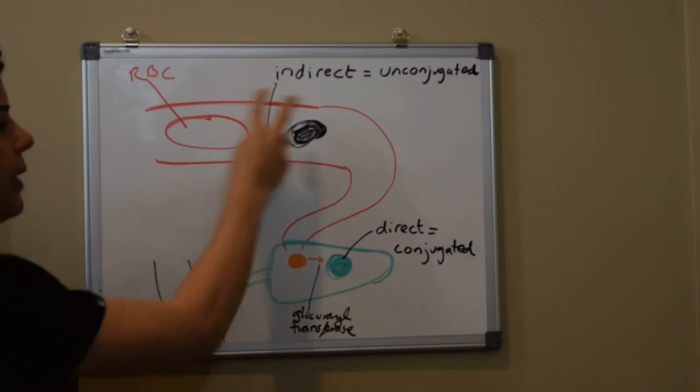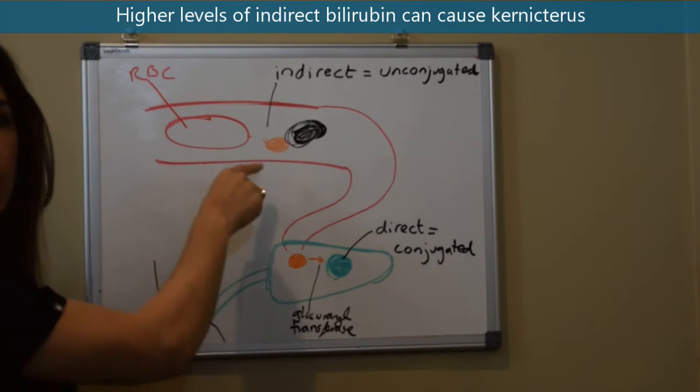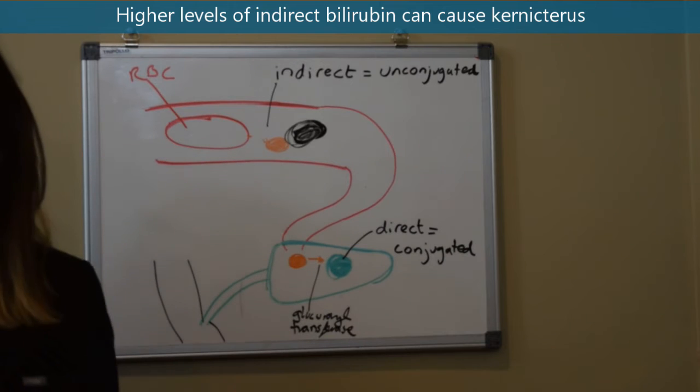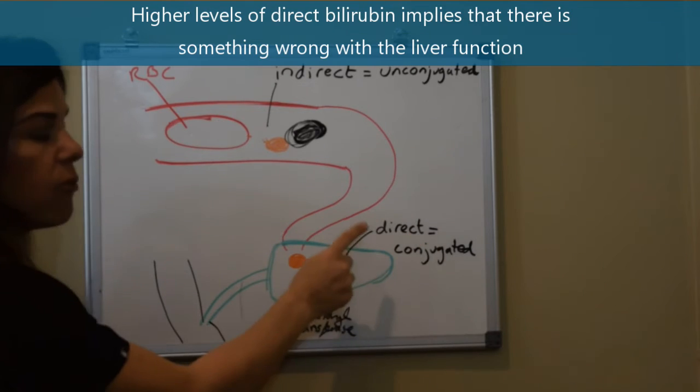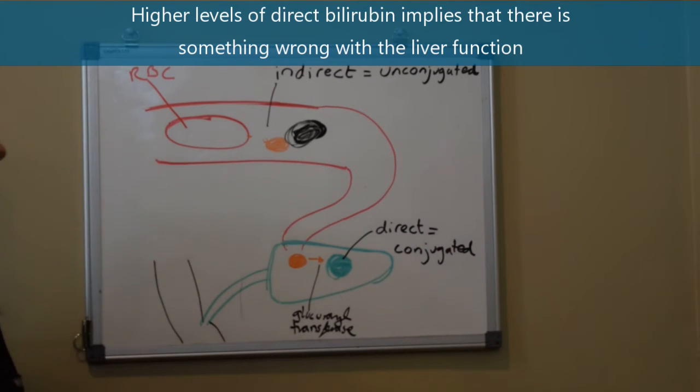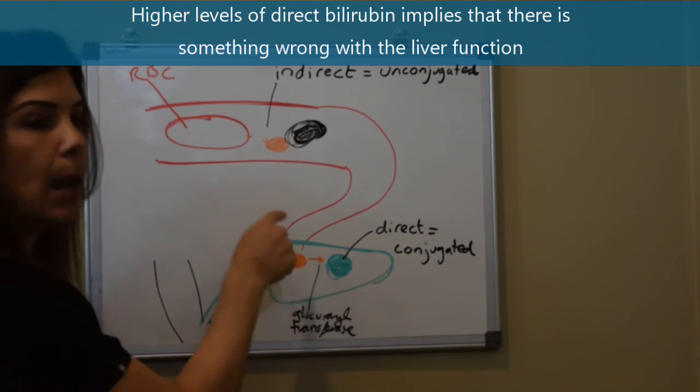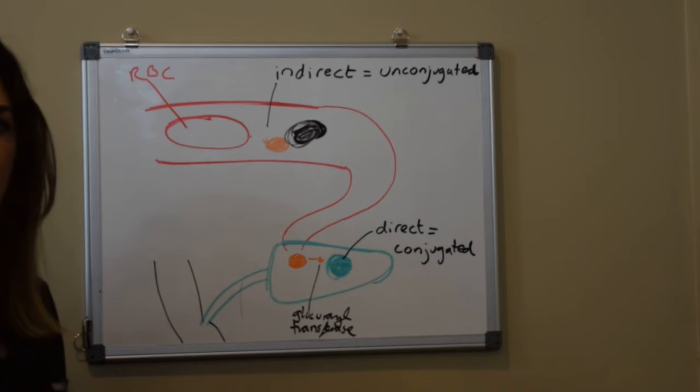We worry about these two bilirubins for two different reasons. We worry about the indirect bilirubin because if that number gets really high it causes kernicterus. We worry about a high direct bilirubin not because it can necessarily cause kernicterus but because it implies that there is something wrong with the liver if that number is building up.